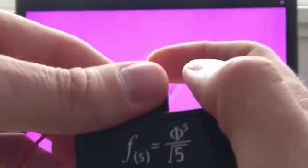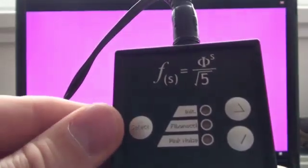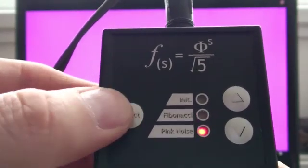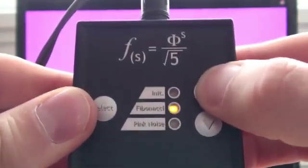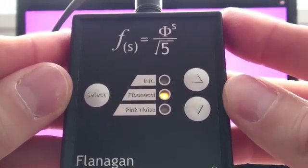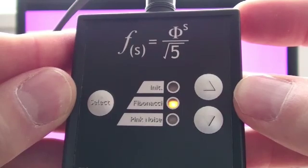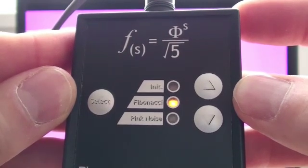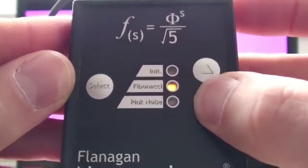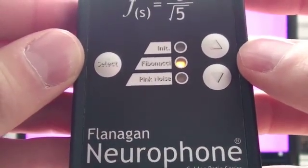Now to give you an idea of the signal I'll plug the Neurophone into the stereo and by pushing the left button just once we would enter the Fibonacci program. Now this Neurophone GRS Series is the first Neurophone which has this inbuilt Fibonacci sound.